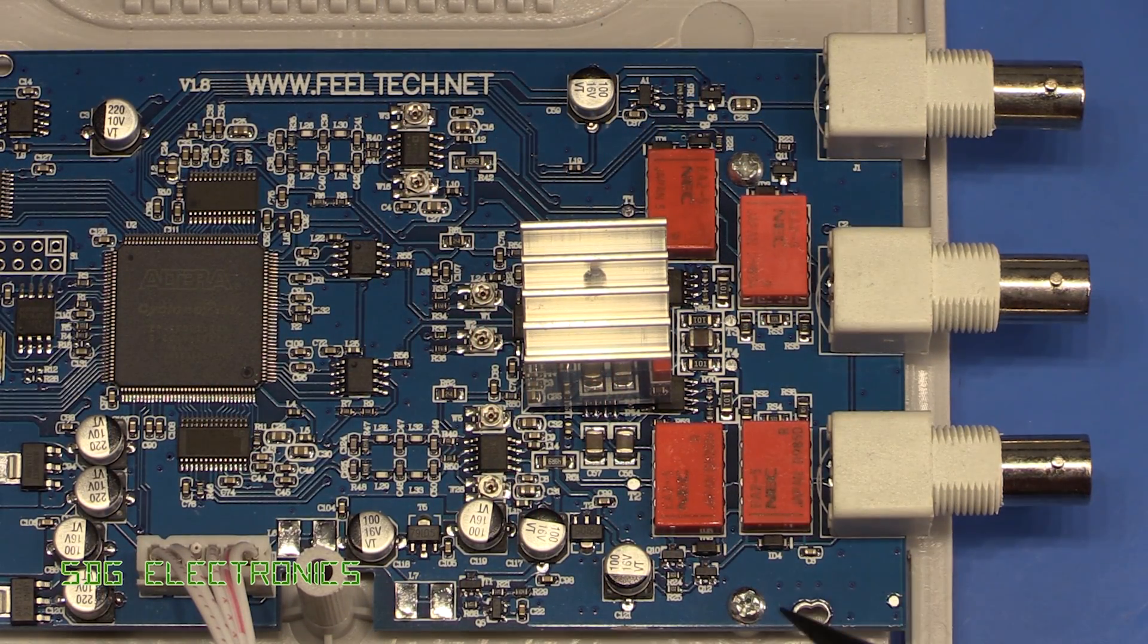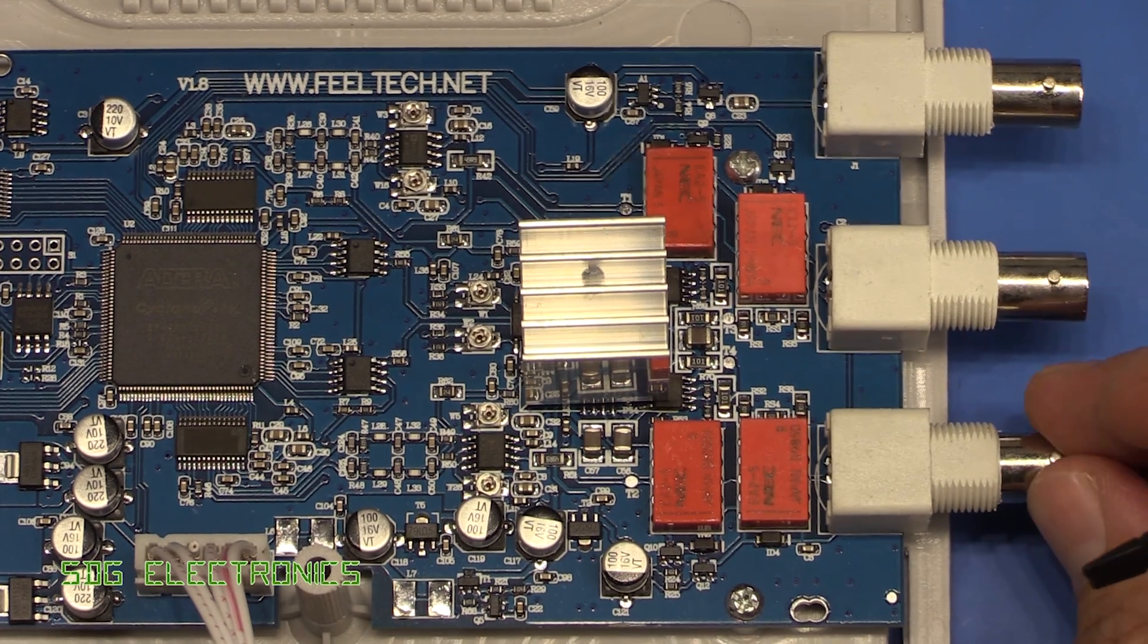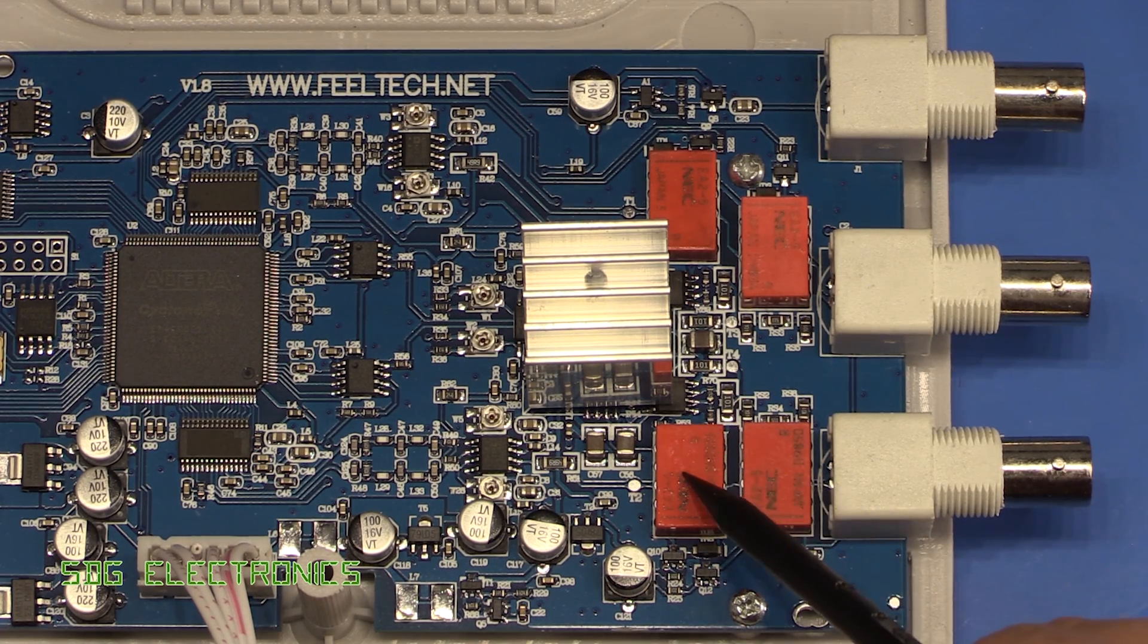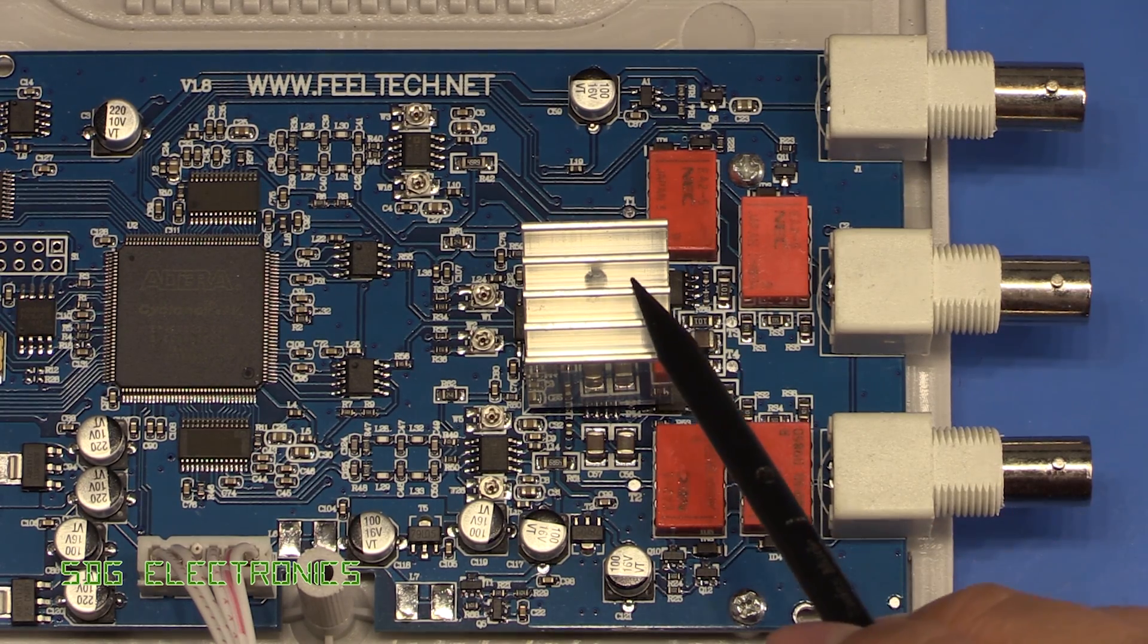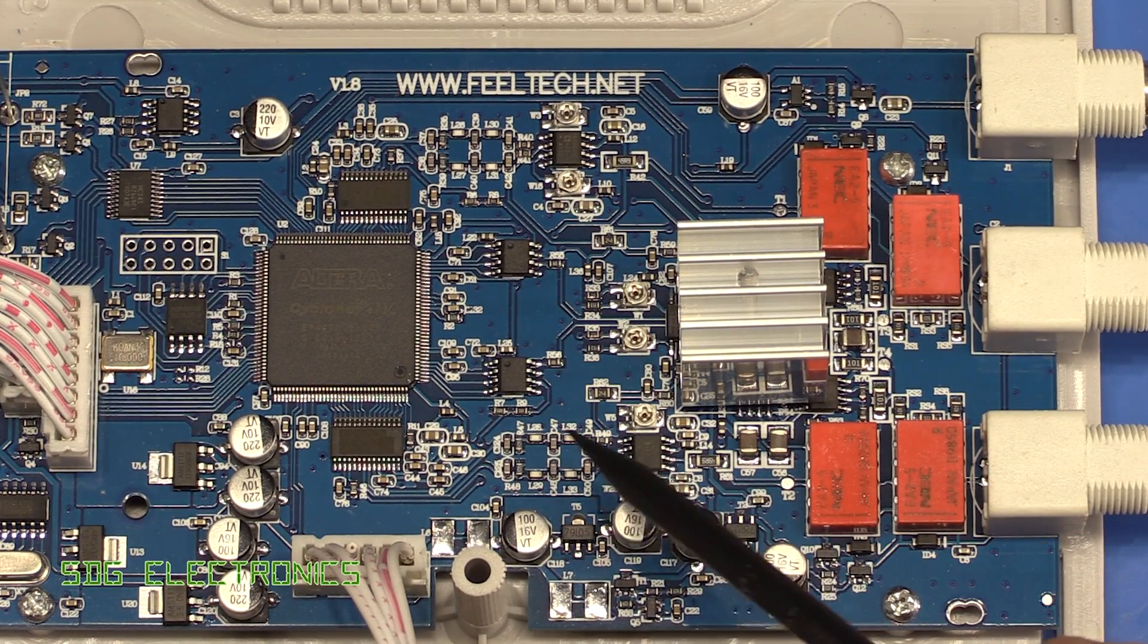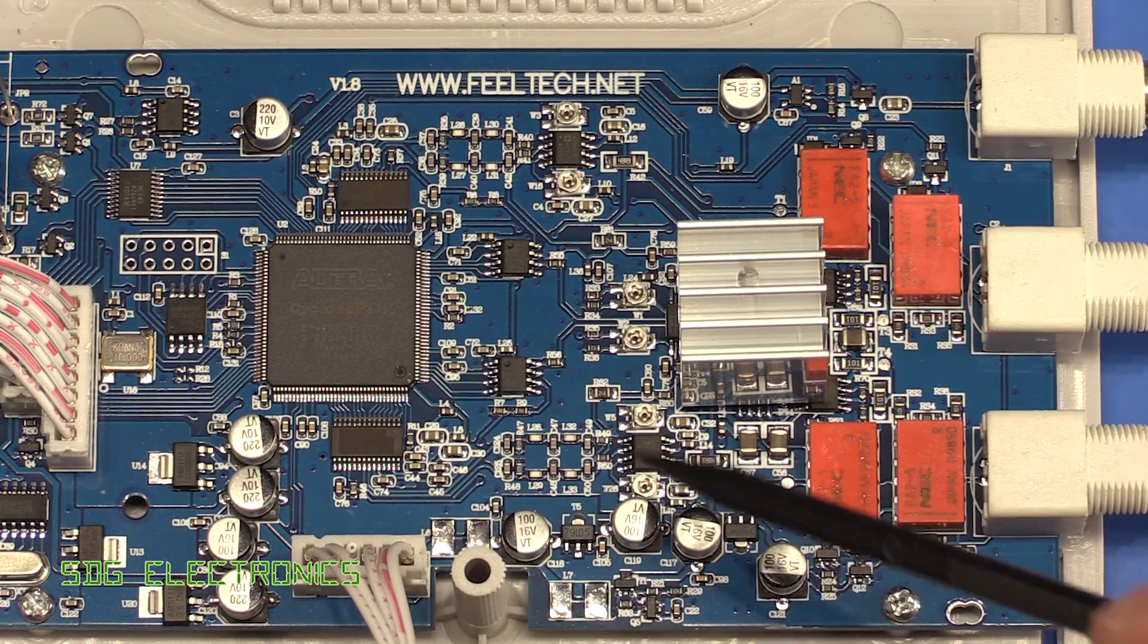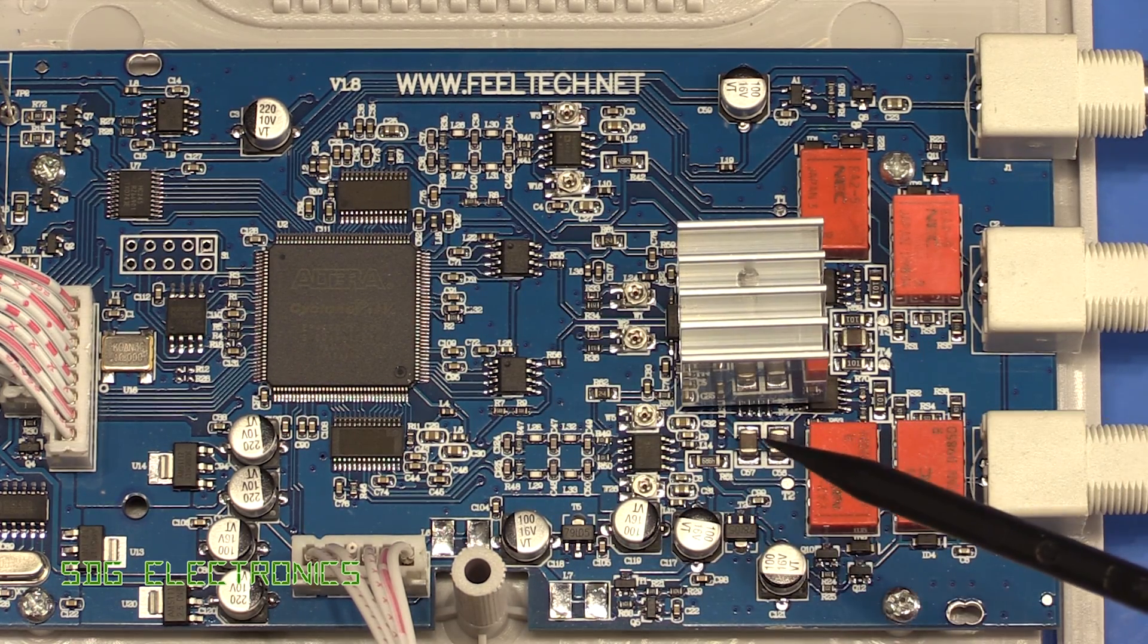The actual signal generator PCB isn't too bad at all. We've got some fairly decent BNC connectors which are rigidly mounted to the PCB. We've got some NEC relays, two of them are switching in and out the 50 ohms termination, and these two are doing some gain switching on these two output op-amps. The main output drivers are underneath this little heatsink.